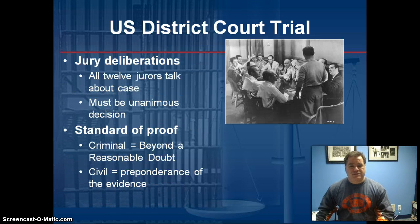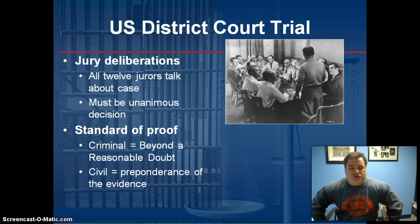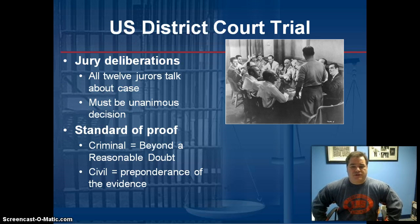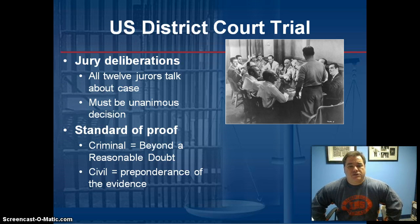After the trial is over, the jury deliberates — they go into a room and talk over the case. It has to be unanimous: a 12-0 decision, either 12-0 guilty or 12-0 innocent. If you have one person that disagrees, it's called a hung jury, and then you might have a retry — retrying the case before a new jury.